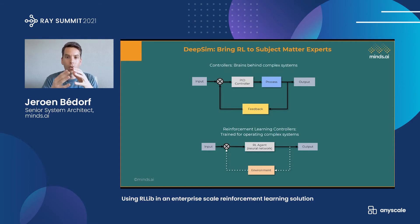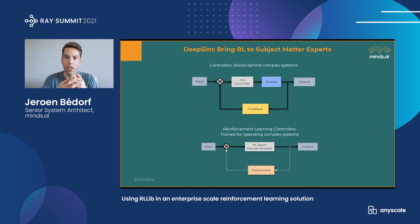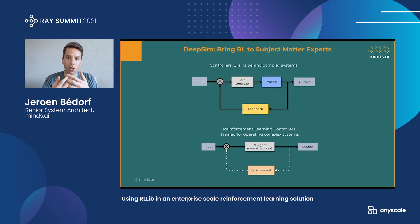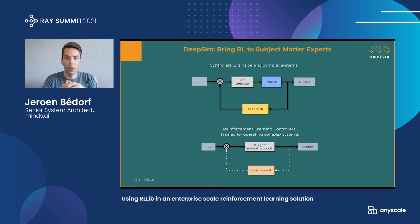What is a controller and how can it be used with neural networks? A controller takes an input or observation. In traditional controllers, that can be a set of PID controllers, which use heuristics and lookup tables to determine what action should be taken. These actions are sent to actuators, the process takes them, and that results in an output, which feeds back into the loop so the PID controller gets new observations and takes new actions. The reinforcement learning controller works very similarly, but instead of a PID controller, you have a neural network — an RL neural agent — in the loop.